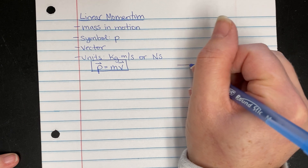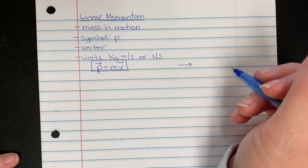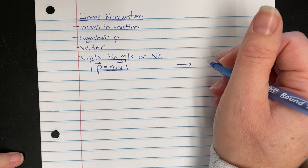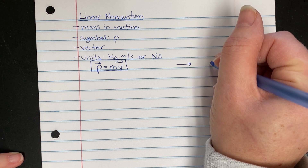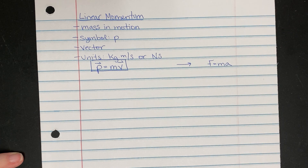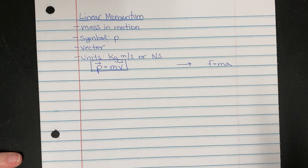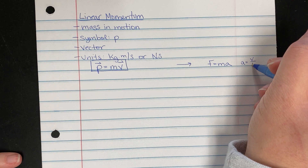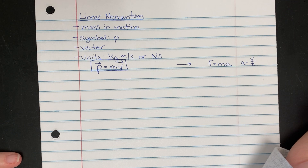I want to do a quick aside here — you don't necessarily have to write this down, but I want you to know where this comes from. We know that F equals ma, but this actually isn't how Newton wrote this law. This is the derivation. What Newton really wrote was that acceleration is really the change in velocity over the change in time.